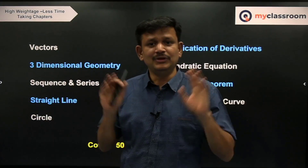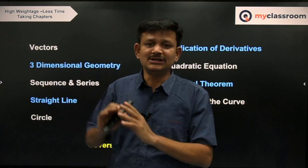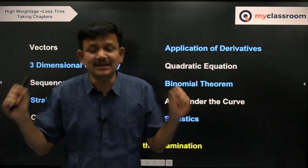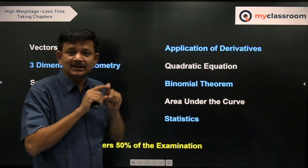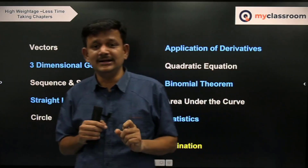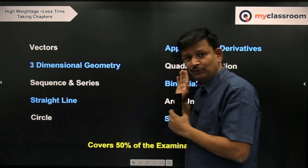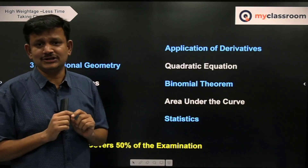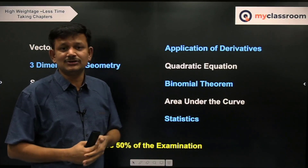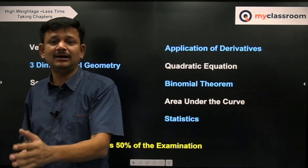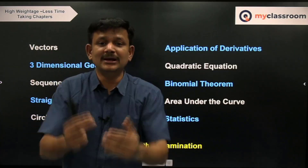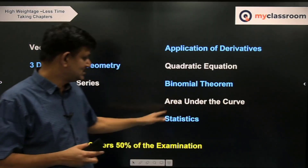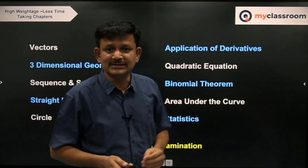Statistics is not at all formula-intensive. Do not go into distribution tables, cumulative distribution, or quartile deviations — none of them are required. Focus on basic mean, mode, median, the empirical formula between them, standard deviation, and variance. There is a shortcut for standard deviation — go through that. Then focus on questions on standard deviation of first n natural numbers, even natural numbers, odd natural numbers, or numbers of the form 7k+r, and how multiplying or adding a number to a sequence affects mean and variance.